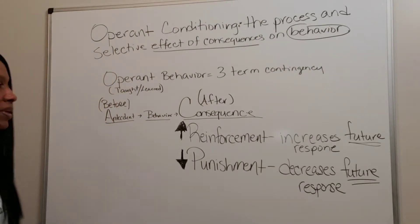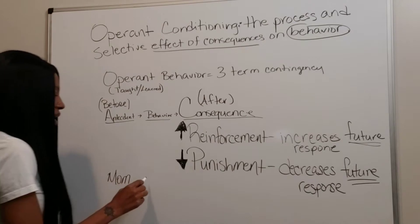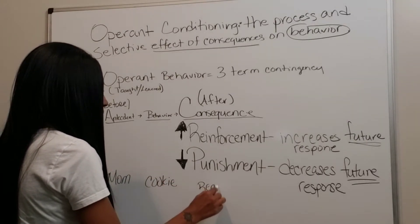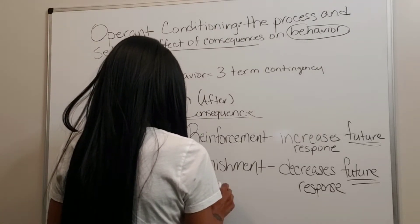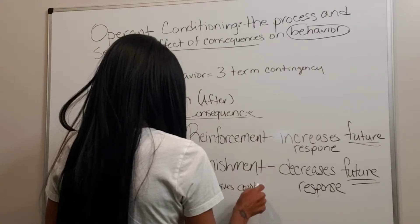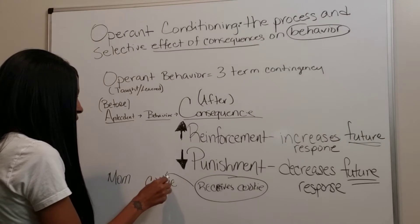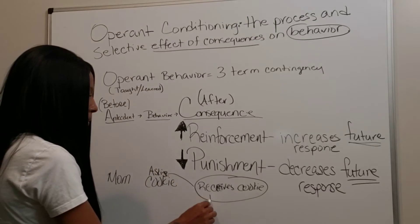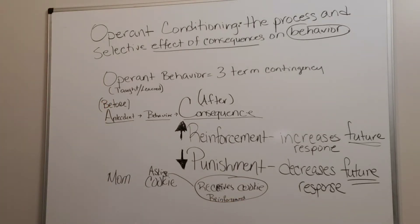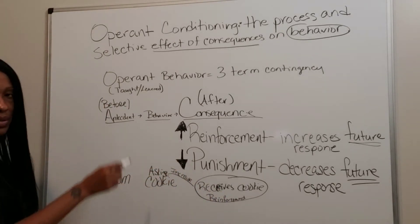Let's do an example. Let's use mom. The behavior was asking for the cookie, and then they receive the cookie. Receiving the cookie was the actual reinforcement, and it should increase the asking-for-cookie behavior. So we expect that next time in the future, he'll keep continuing to ask mom for the cookie.